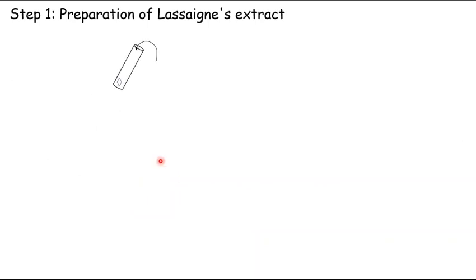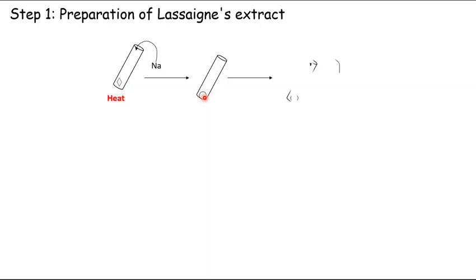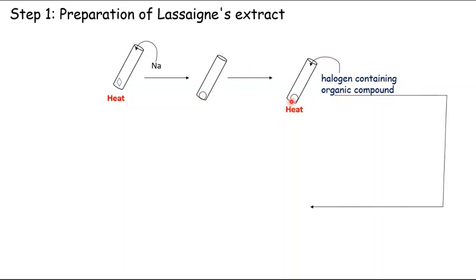In the Lassaigne's extract procedure, we first take sodium and heat it until it becomes a molten globule. We then add the halogen-containing organic compound to fuse it with the molten sodium. We heat it again, then heat it strongly until it becomes red hot, so that the halogen from the organic compound fuses with sodium.